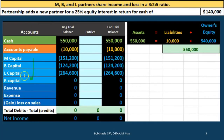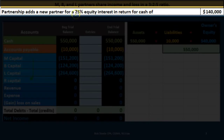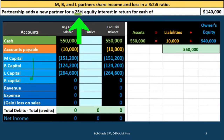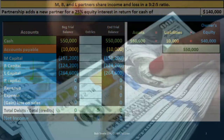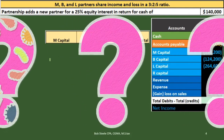We will be adding a new partner R to the partnership. The existing partners M, B, and L share income and loss at a 3:2:5 ratio. The new partner R is going to enter at a 25% interest, which is agreed upon between the new and existing partners in exchange for $140,000 that R will contribute to the partnership. The partnership receives $140,000 and gives R a 25% interest.